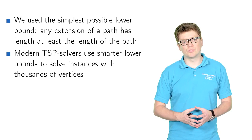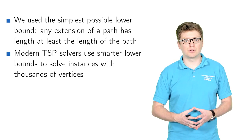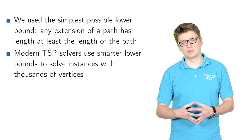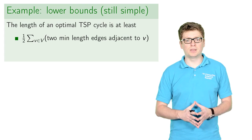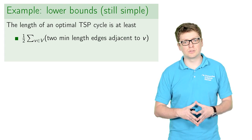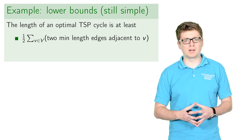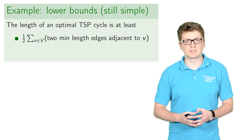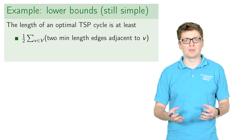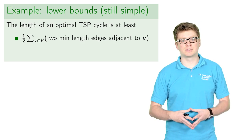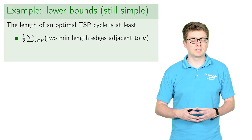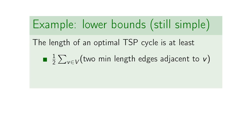The modern TSP solvers that are able to handle graphs with thousands of vertices use smarter heuristics for lower bounding an optimal solution in a given graph. We provide two examples which are still simple enough and not so smart as used in state-of-the-art solvers. So the first lower bound says that in any graph, the total length of any Traveling Salesman cycle is at least the following expression: one half times the sum over all vertices where for each vertex we compute the sum of two edges of minimum distance adjacent to this vertex.